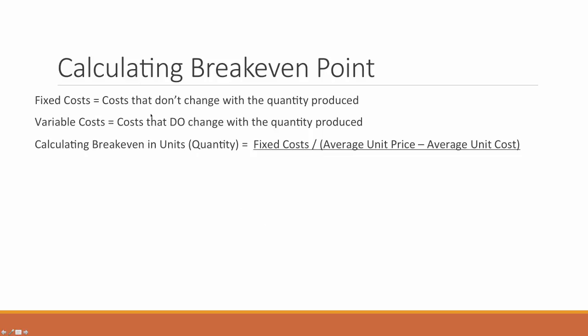Variable costs are costs that change with the quantity produced. For example, if you opened an ice cream shop, variable costs would be milk, ice cream cones, napkins, and toppings — basically, the more you produce, the more of these items you use. Costs that don't change with the quantity produced — such as the rent or lease on your building, basic electricity, insurance, or the cost of your ice cream machine — are fixed costs. They don't change regardless of how many you produce or sell.